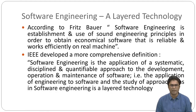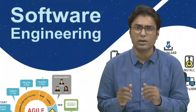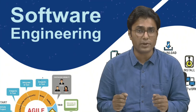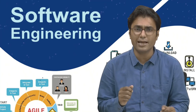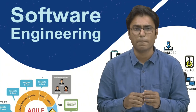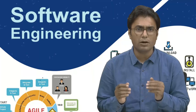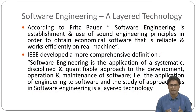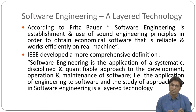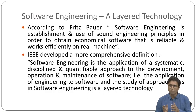Software engineering is a layered technology. According to one definition, software engineering is the establishment and use of sound engineering principles in order to obtain economical software that is reliable and works efficiently on real machines. According to IEEE, a more comprehensive definition is: software engineering is the application of a systematic, disciplined, and quantifiable approach to the development, operation, and maintenance of software — essentially the application of engineering to software.